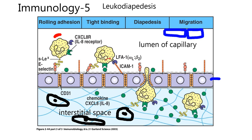This neutrophil is tied to the wall by molecules — we're not going to be responsible for the names. Once a neutrophil attaches to some of these molecules, it tends to roll. And sooner or later it will squeeze through the endothelial cells — that's called diapedesis. There might be called tight binding later. There's rolling adhesion, there's definitely adhesion between the molecules, and then this migration.